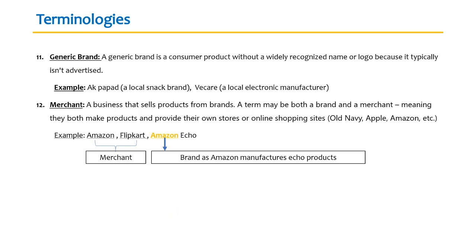Merchant — a business that sells products from brands is known as a merchant. At times a term such as Amazon could be both a brand and a merchant — they make their own products and also sell through other stores or aggregator sites. Amazon as a company is a merchant. Amazon Echo, for example, could be bought from any other site. So product and brand — those are known as merchants.